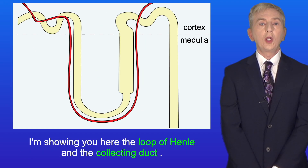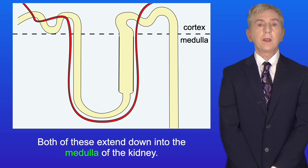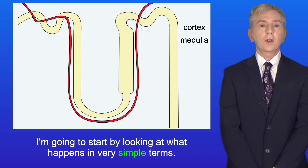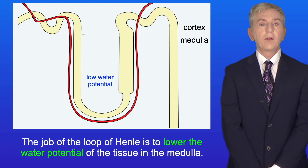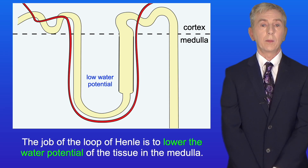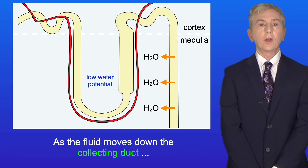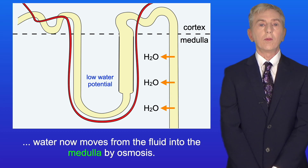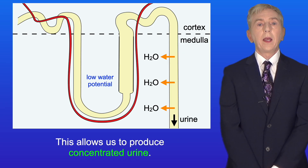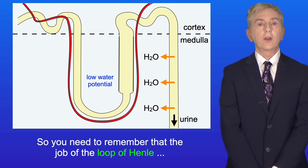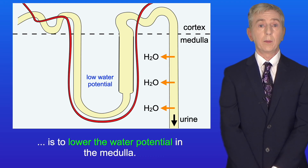I'm showing you here the loop of Henle and the collecting duct. Both of these extend down into the medulla of the kidney. The job of the loop of Henle is to lower the water potential of the tissue in the medulla. As the fluid moves down the collecting duct, water now moves from the fluid into the medulla by osmosis. This water is then reabsorbed back into the blood, and this allows us to produce concentrated urine.